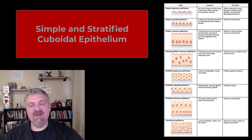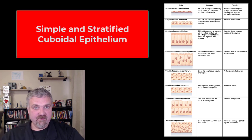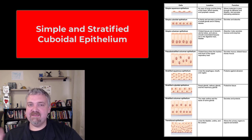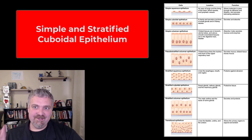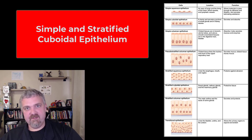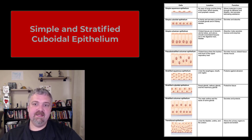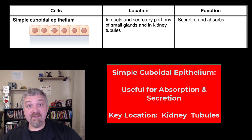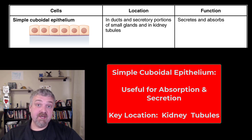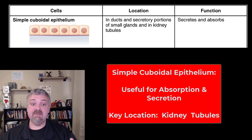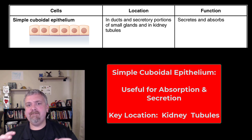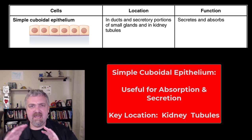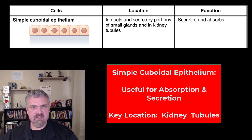Dr. O here. We are going through the whole list of epithelial tissue types, and I'm going to be completely honest with you — these two are the least important. We are going to cover simple and stratified cuboidal in this video. Simple cuboidal epithelia: remember, simple tells us one layer, cuboidal tells us the shape of the cells. The primary places you will see these are lining your kidney tubules and the ducts of some of your glands.